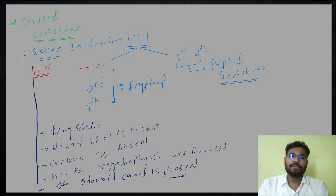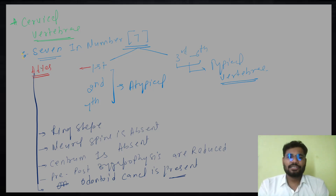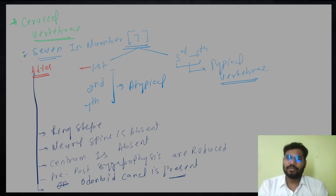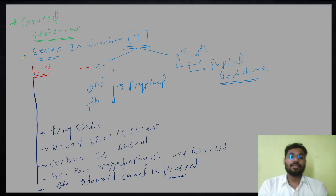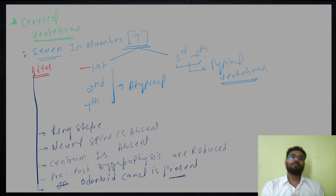So, to recap: the first vertebra is called atlas. Atlas is a ring-shaped structure. Neural spine is absent — highly reduced and absent. Centrum is absent. Pre and post zygapophysis are also absent.